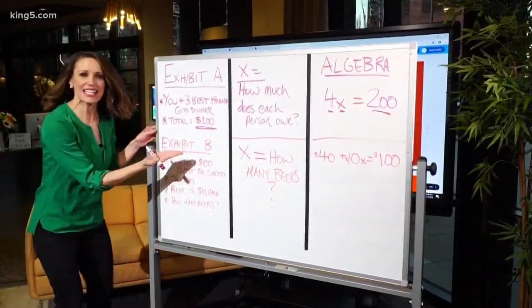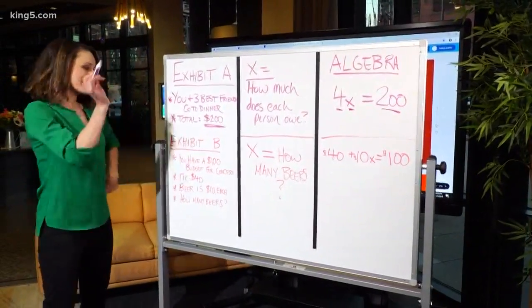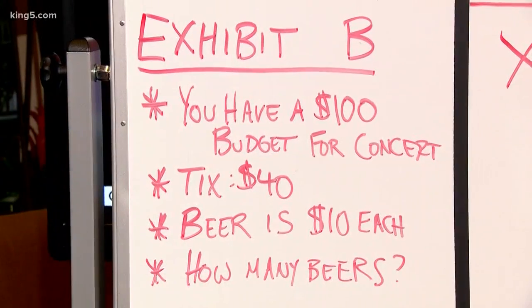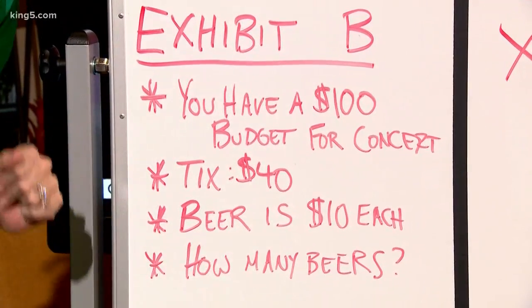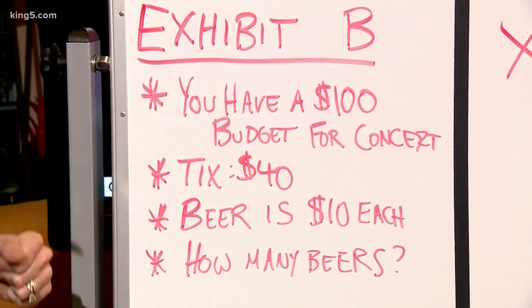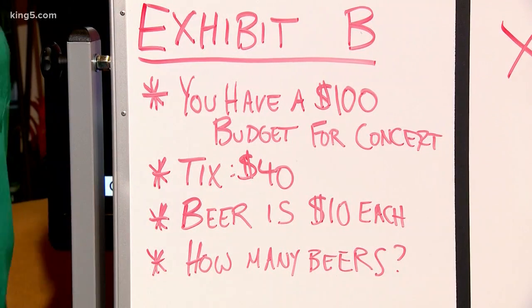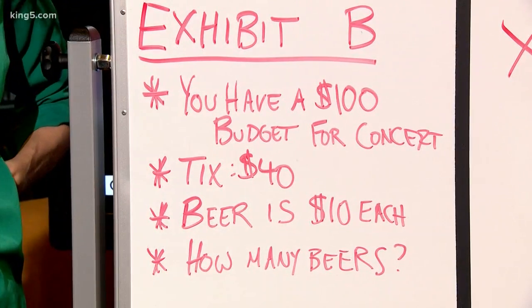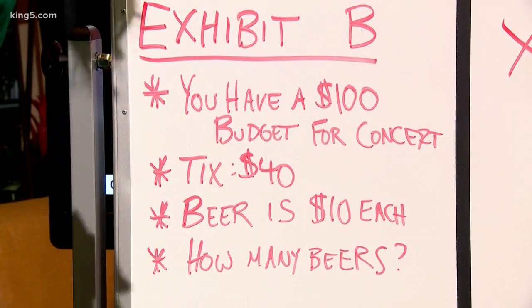Here's another one. Exhibit B, if you will. Let's say you have $100 in your concert budget. Tickets are $40. Beer is $10 each. How many beers are you going to be able to budget for when you go to this concert? This is a very important question.